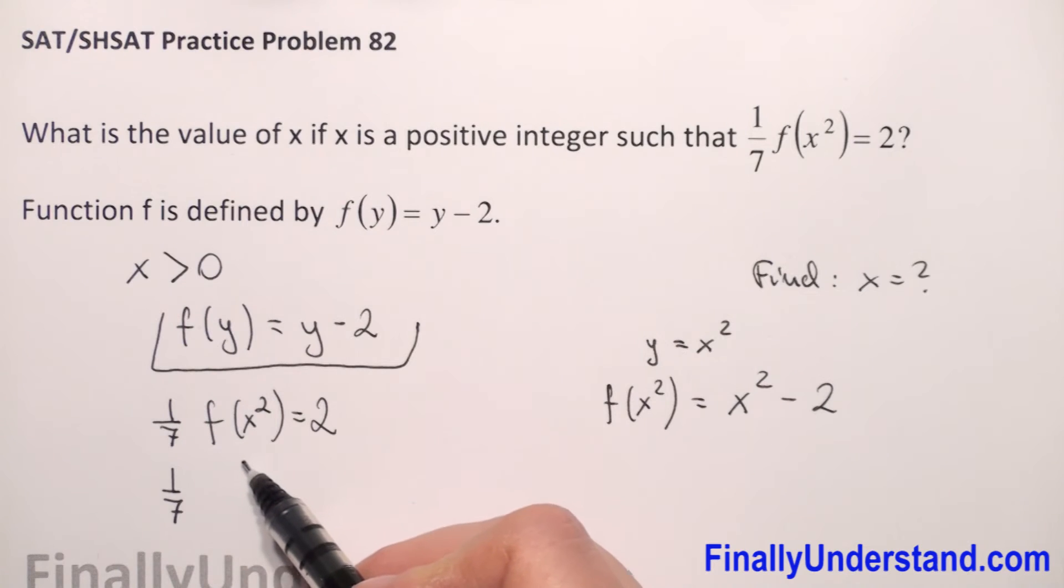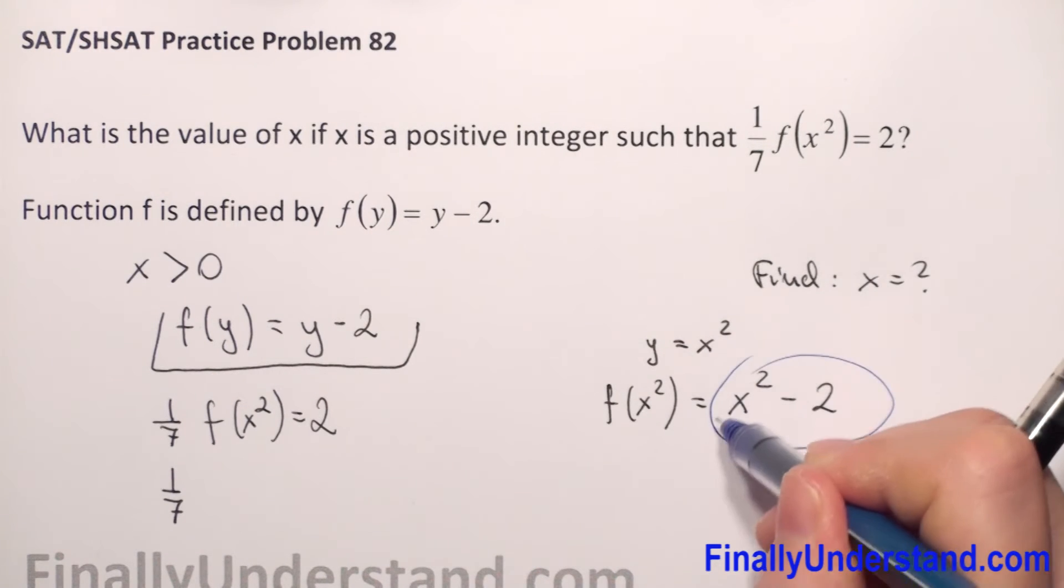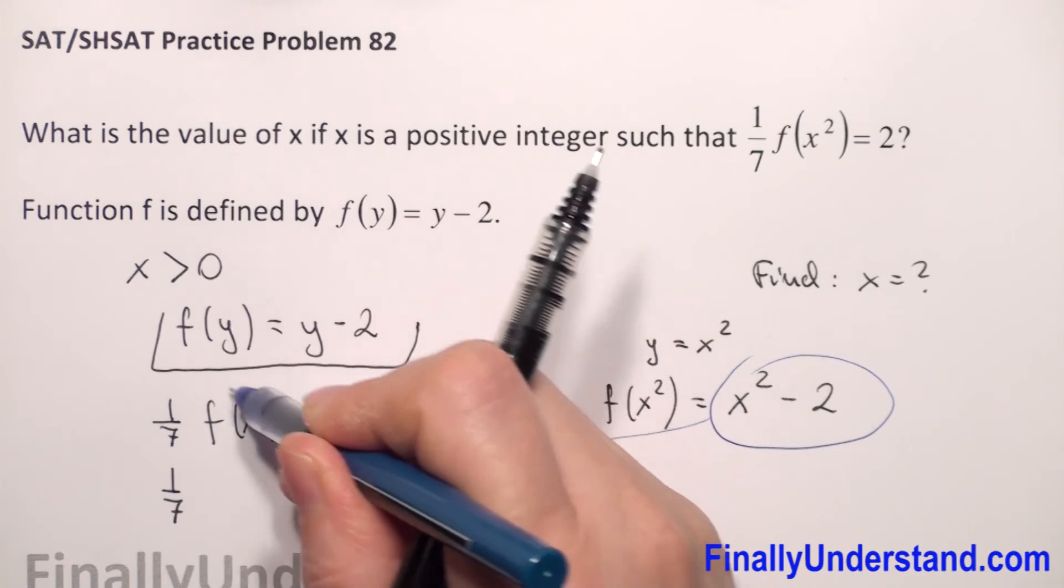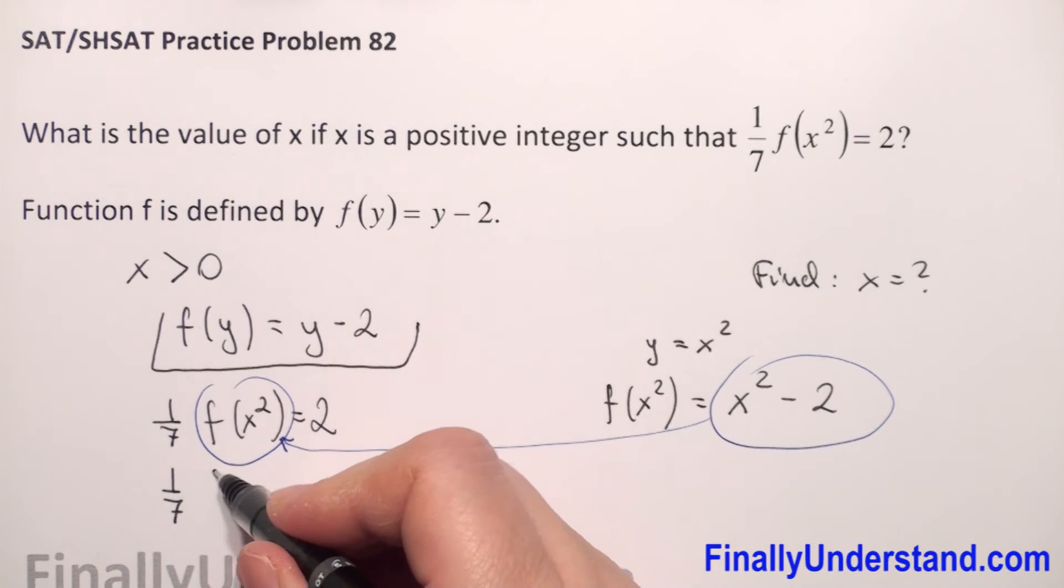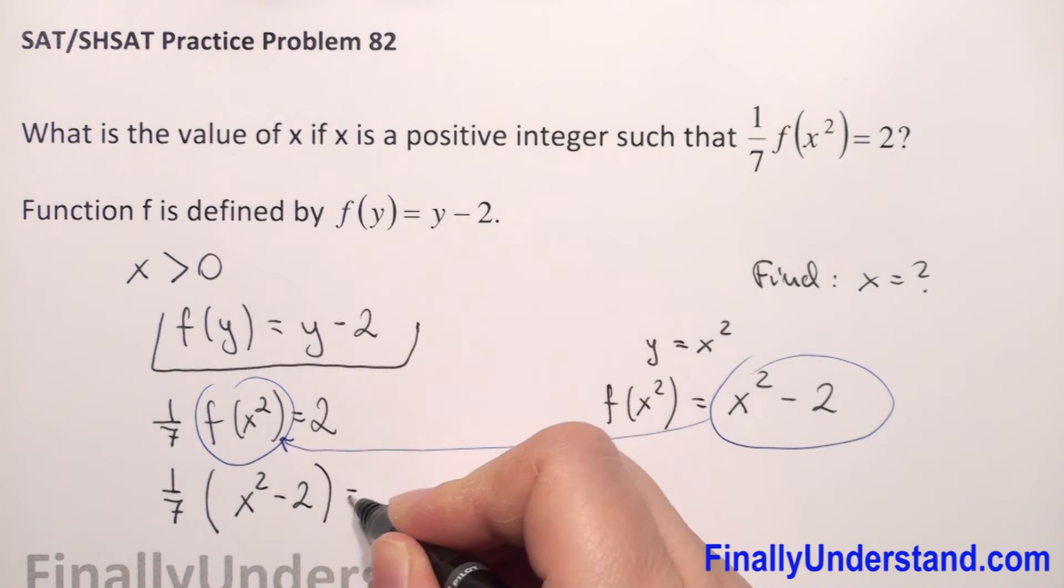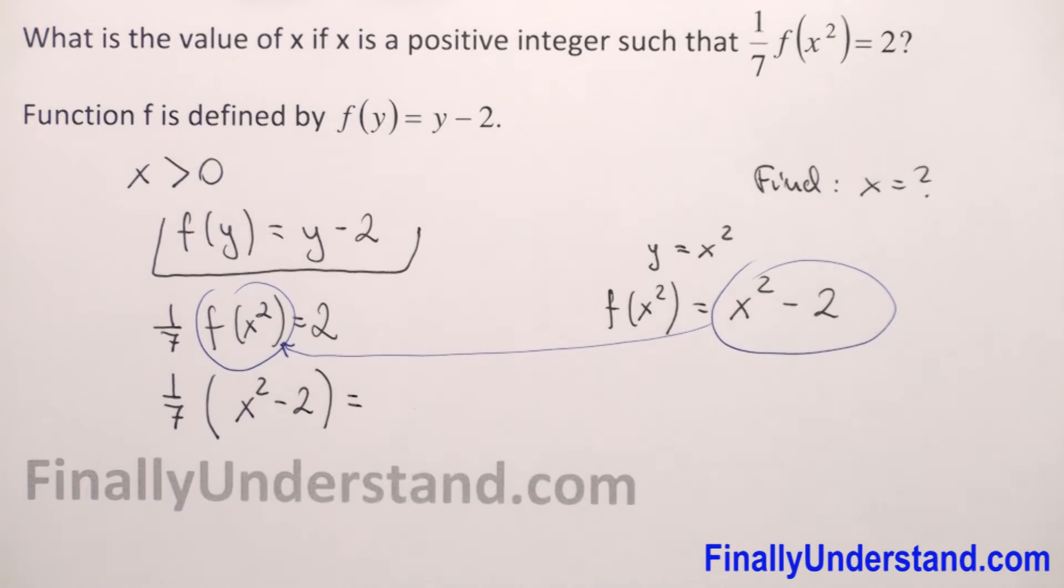So now we will substitute f of x squared by x squared minus 2. So we have 1 over 7 times, we will put in parenthesis, x squared minus 2, and this is equal to 2.